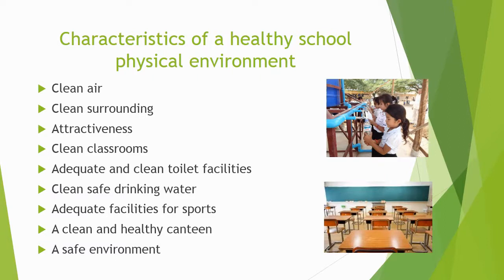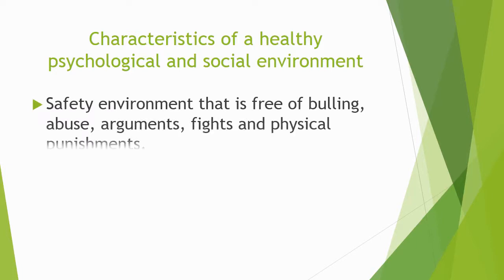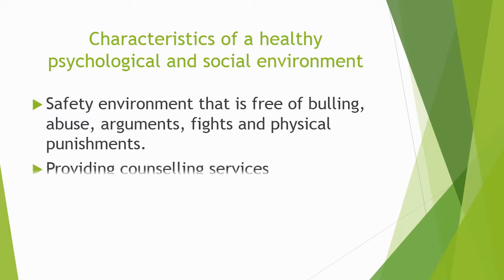Now we can discuss some characteristics of a healthy psychological and social environment. If a school environment is healthy psychologically and socially, it should have a safety environment that is free of bullying, abuse, arguments, fights, and physical punishment.